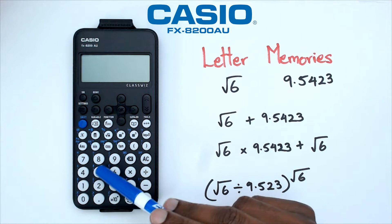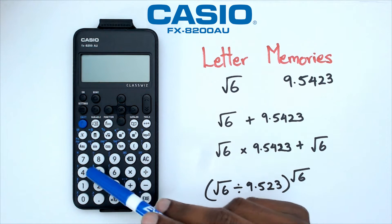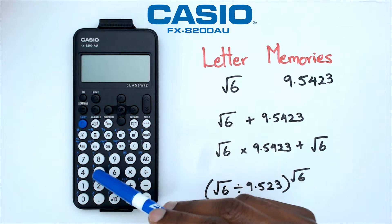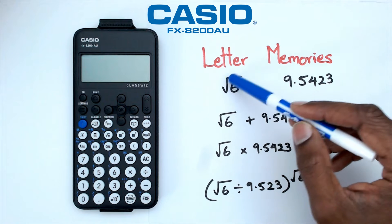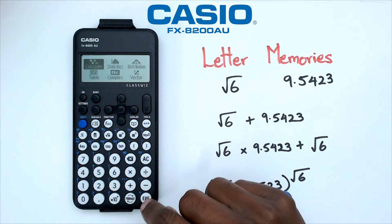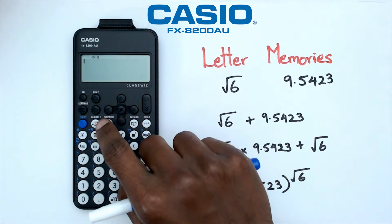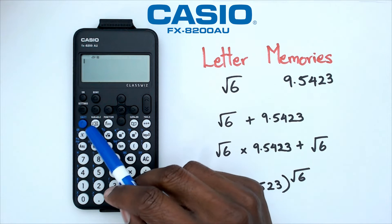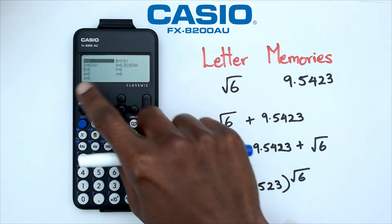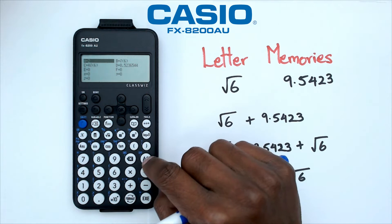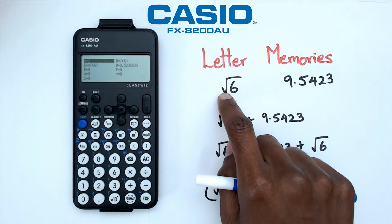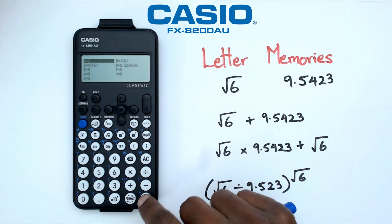These letters on the top left corner of the buttons — you can take numbers and store them in these letters. The way we're going to do it is to go into calculator mode, and right here there's a button called Variable. If you click on Variable, as you can see I've already got a few different numbers there. I'd like to replace A with square root of six.